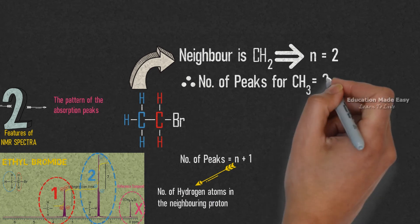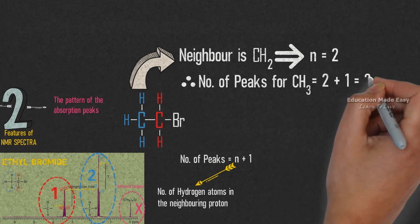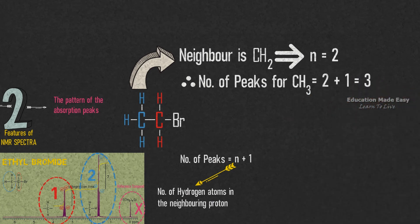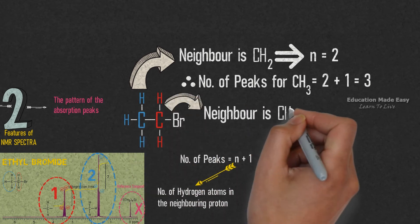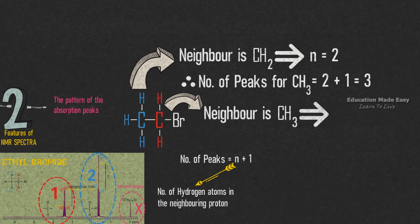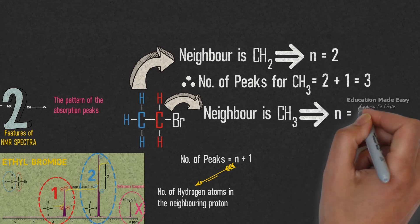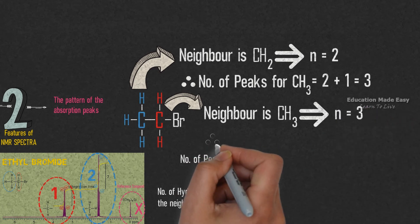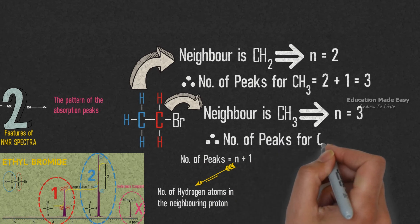Now for the CH2 proton, the neighboring proton is CH3, which means here the value of N is equal to 3. Therefore, number of peaks for CH2 signal is equal to 3 plus 1, which is equal to 4.